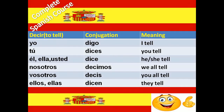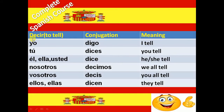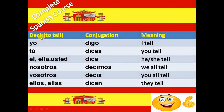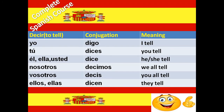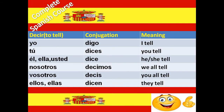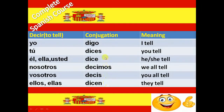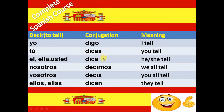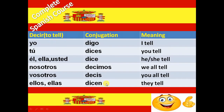The next verb is Decir. Decir is an ir ending verb but Decir is an irregular verb, which means to tell. The conjugation of Decir verb is Digo, Dices, Dice, Decimos, Decís and Dicen.